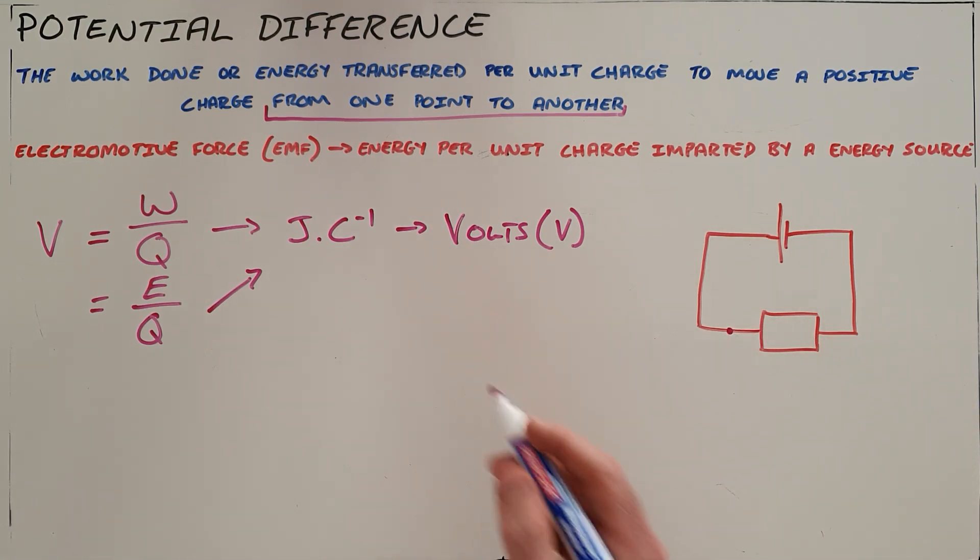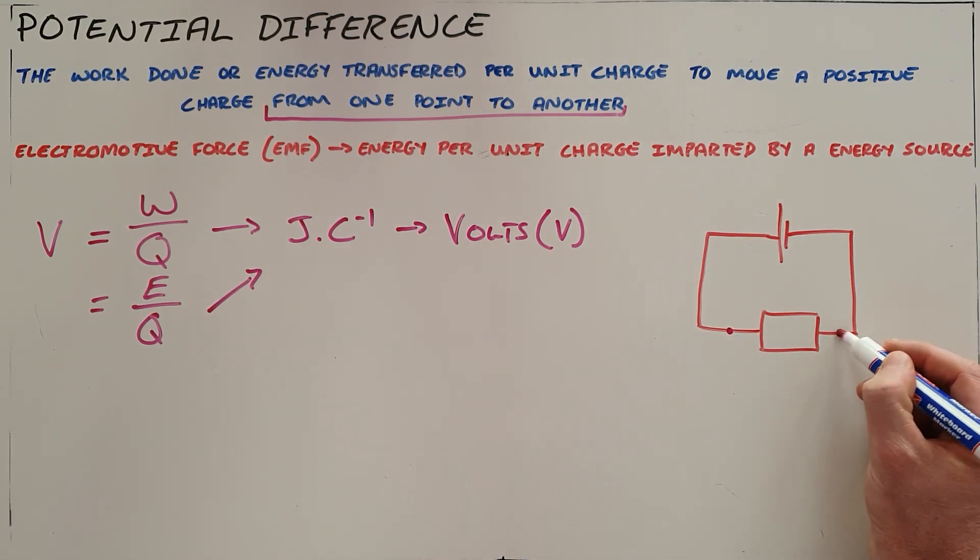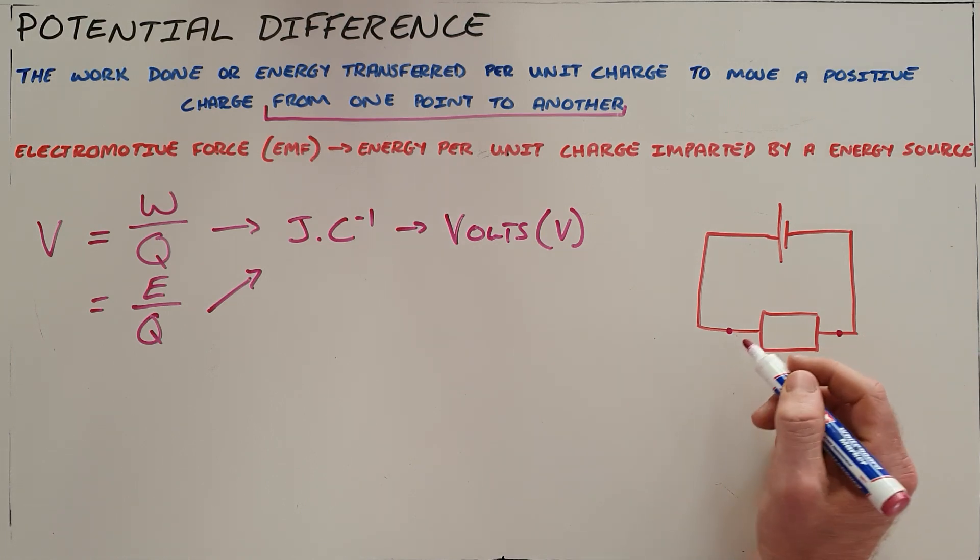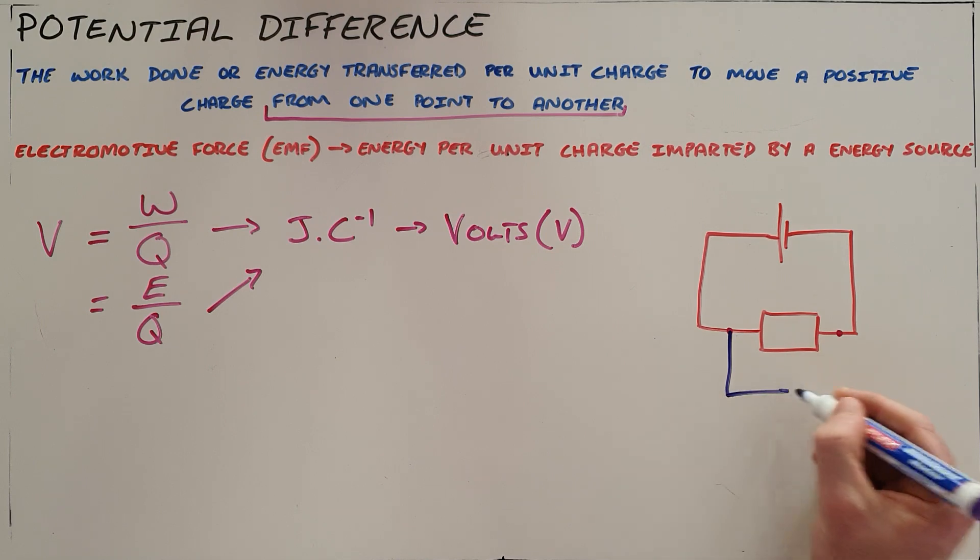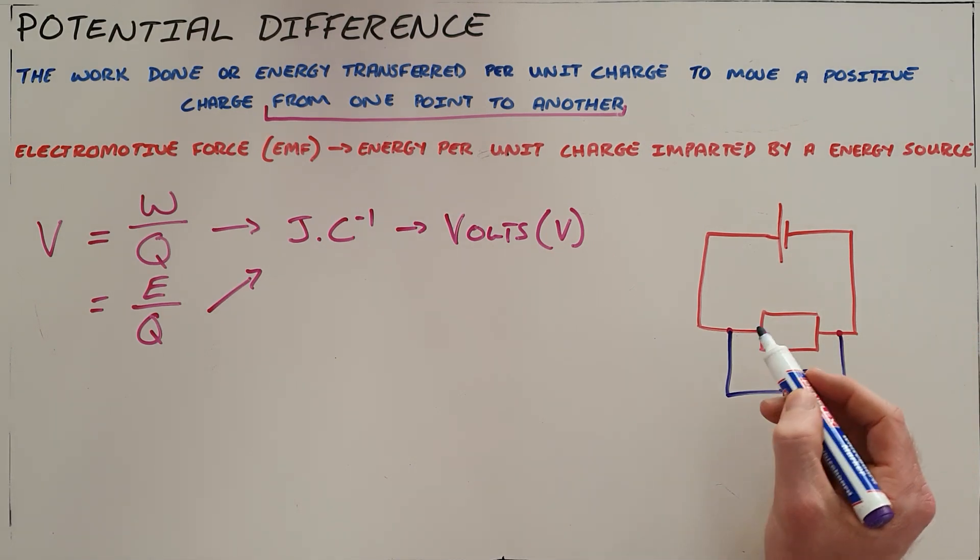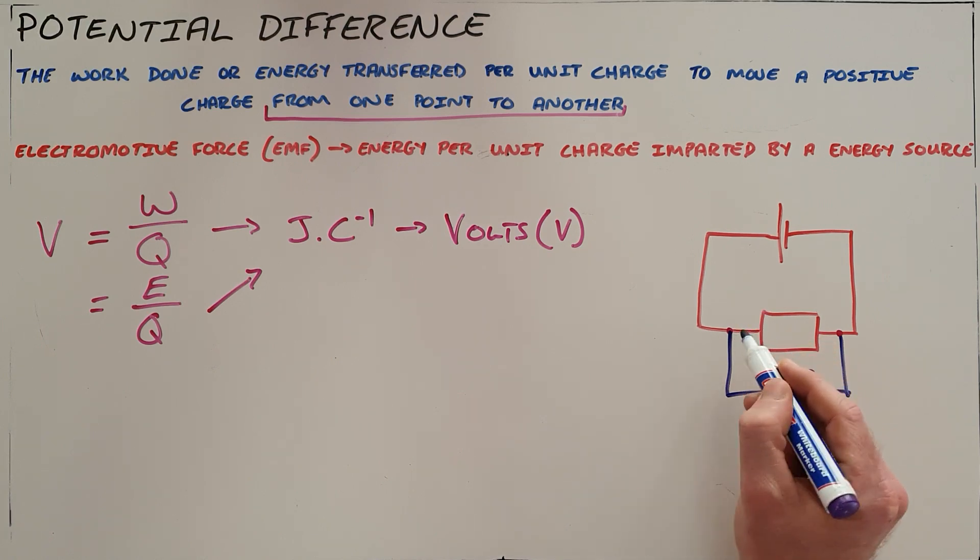So what that tells us is why it is necessary for a voltmeter always to be connected in parallel over a circuit, because what that voltmeter is doing is measuring the amount of energy that is used between one point in the circuit and another point in the circuit.